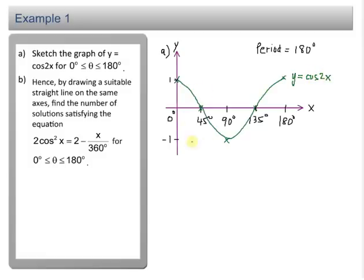Now we move on to part B. For part B, we have to draw a suitable straight line to find the number of solutions for this equation. We have 2cos²x = 2 - x/360°. First, we have to determine the suitable straight line.